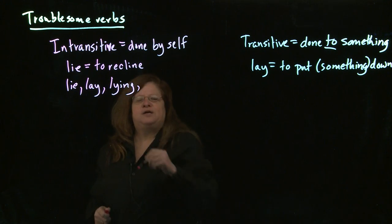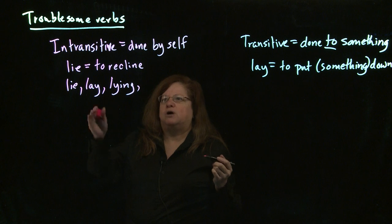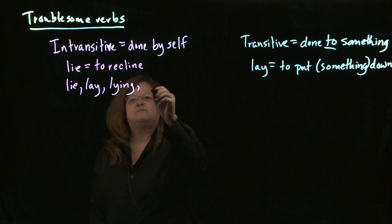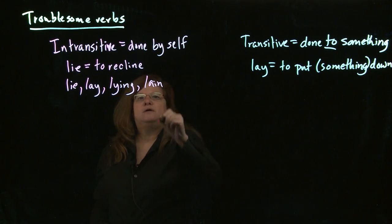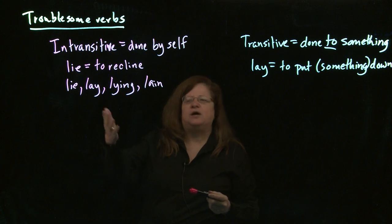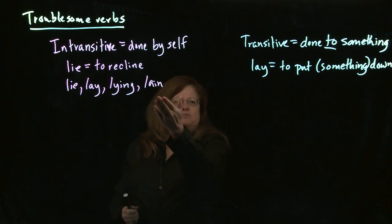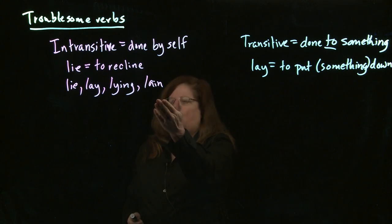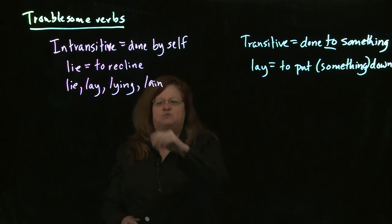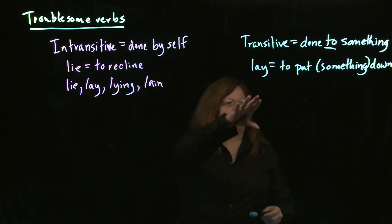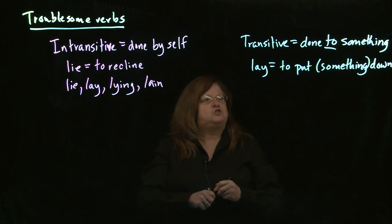The past participle of lie is 'lain' — I have lain on the beach many a time. This one in particular sounds very weird because people misuse it so often. The reason they misuse it so often is because it's easily confused with lay.